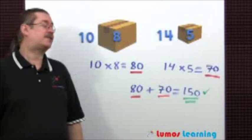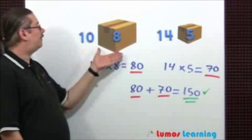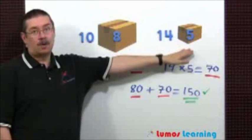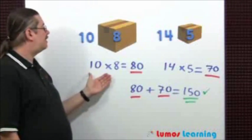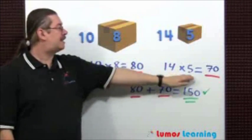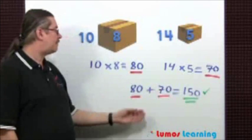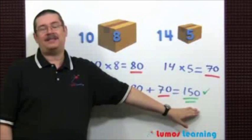And here's another possible combination. Susan can buy 10 of the larger packages and 14 of the smaller ones. 10 times 8 is 80, 14 times 5 is 70. 80 plus 70 is once again 150.